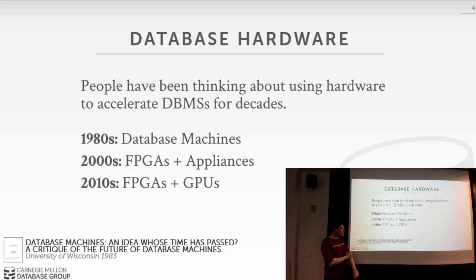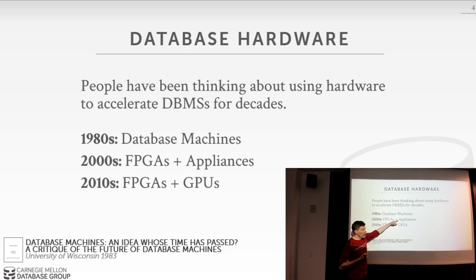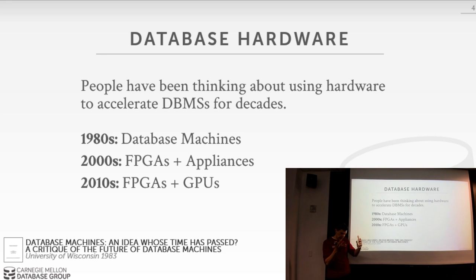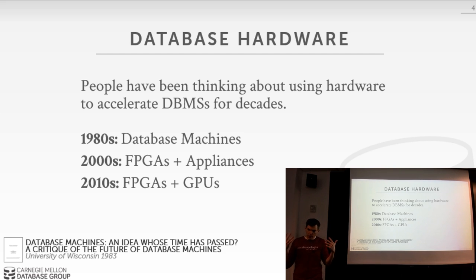In the 2000s we saw two movements: the adoption of FPGAs for custom filtering or database functionality pushed close to storage, and database appliances — commodity hardware with the database system pre-loaded and tuned to that hardware, so you could buy a single rack unit with Oracle or Clustrix installed without tuning OS or kernel parameters. These also fell by the wayside once Amazon EC2 became dominant.